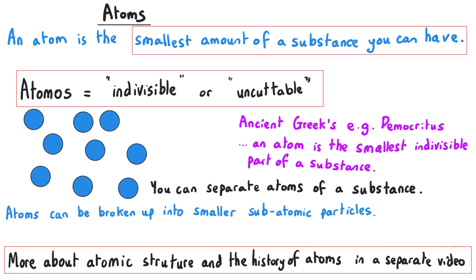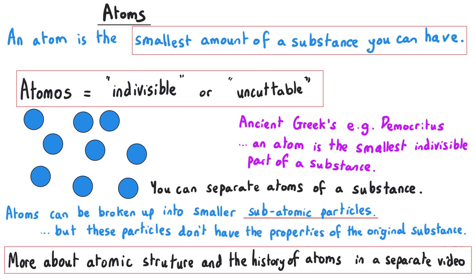It is actually possible to break apart atoms and find even smaller things inside them called subatomic particles. But once you start doing that, the atom stops being a separate entity and stops being the substance it was taken from. So an atom is definitely the smallest amount of a substance you can have, even though it is possible to break it into smaller pieces — they no longer have the elemental properties they had previously.